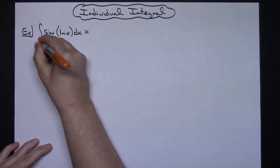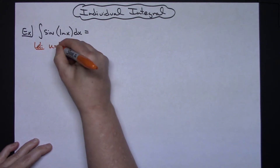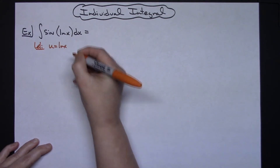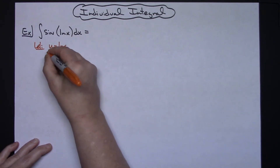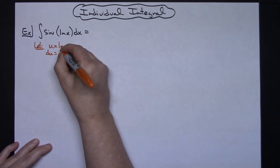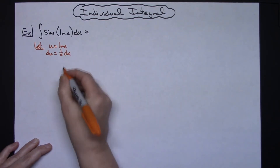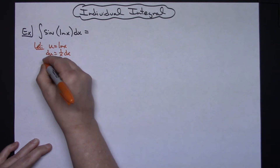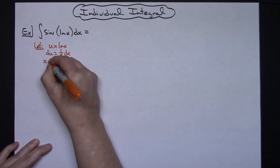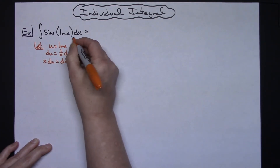I'm going to let u equal natural log of x. I'm going to take the derivative of both sides, so I'll have du equal to 1 over x dx. I'm going to solve for dx by multiplying both sides by x, so x du is equal to dx.